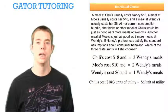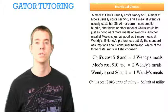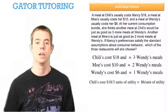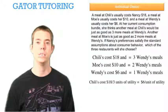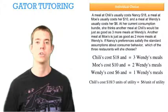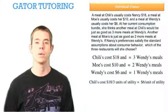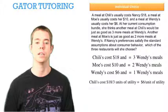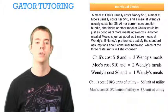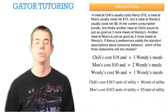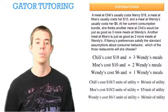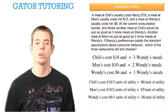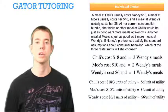Chili's cost is $18 divided by $3 per unit of utility — we're going to use Wendy's meals as our units of utility. So $18 divided by $3 is roughly $6 per unit of utility. Moe's cost is $10 divided by $2, which is $5 per unit of utility. And Wendy's cost is $6 divided by $1, which is $6 per unit of utility.